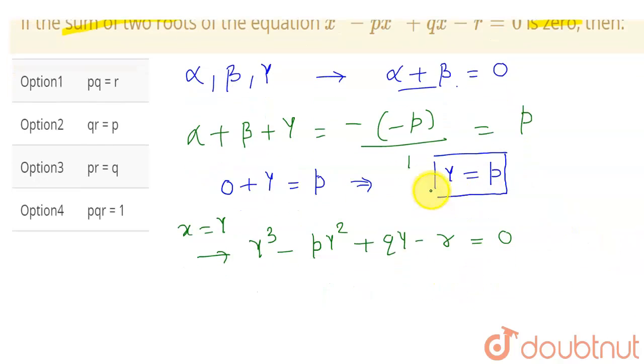But earlier we got that gamma is equal to p. So we can now substitute p in place of gamma. So this will give me p cube minus p times p square plus q times p minus r equal to zero.